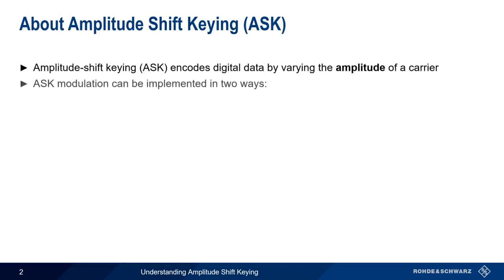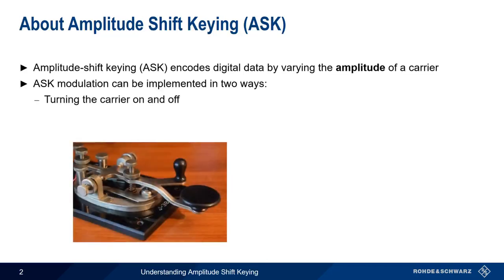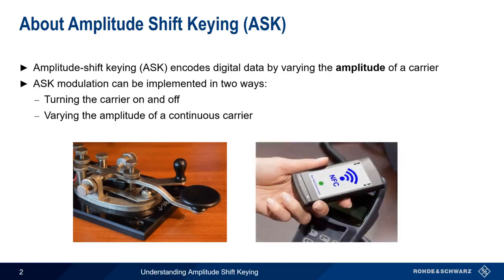There are two general ways in which we can implement ASK. The oldest and easiest method is simply turning the carrier on and off, which is how Morse code is normally sent. The other method is varying the amplitude of a continuous carrier between two or more different levels, all of which are non-zero. An example of this is Near Field Communications, or NFC.